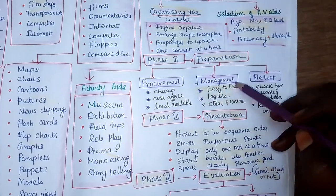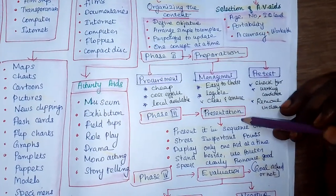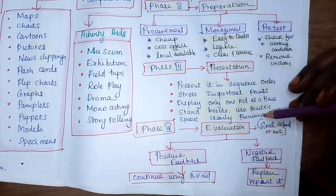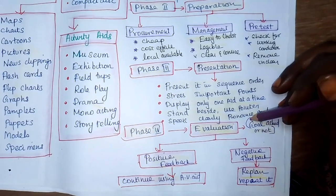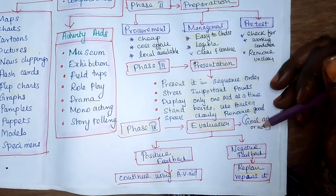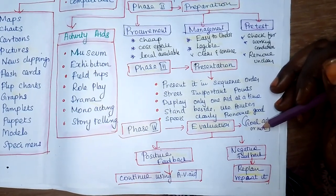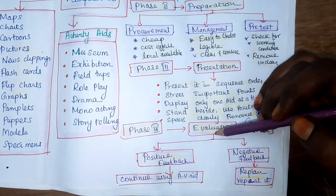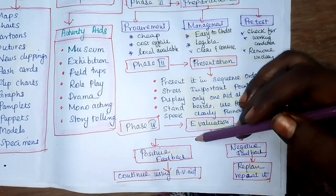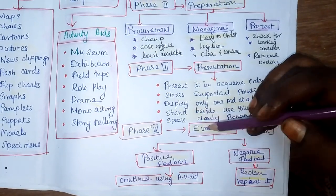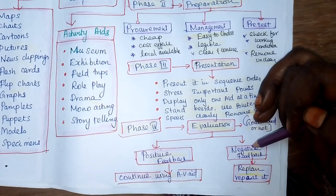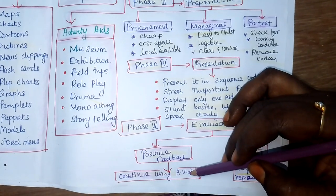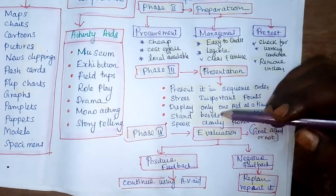Phase 4 is the Evaluation Phase. Evaluation is the process by which you find out whether the goal has been achieved. After class, ask questions. If answers come, it is positive feedback — continue using those AV aids. If no answers come, it is negative feedback — nothing to worry about, but modify your approach. Positive feedback means your class and AV aids are useful; negative feedback signals a need for improvement.